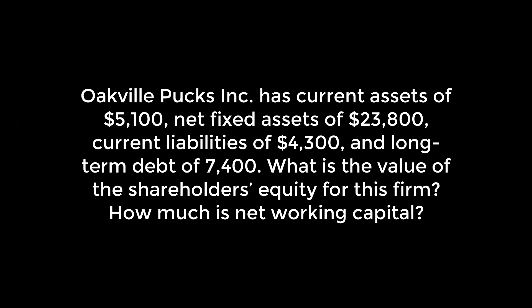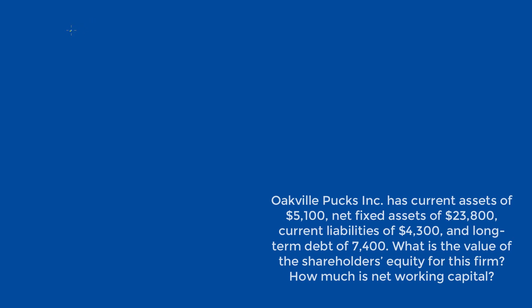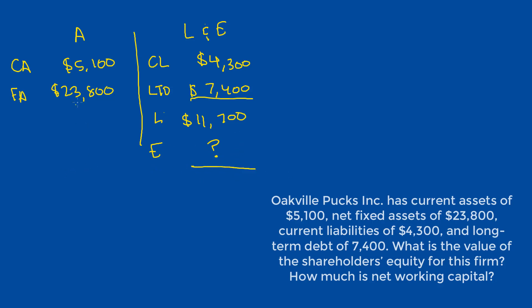Oakville Pucks Inc. has current assets of $5,100, net fixed assets of $23,800, current liabilities of $4,300, and long-term debt of $7,400. What is the value of shareholders' equity for this firm, and how much is net working capital? Our first step is to set up a statement of financial position with assets on the left-hand side and liabilities and equity on the right-hand side. We have current assets of $5,100, fixed assets of $23,800, current liabilities of $4,300, and long-term debt of $7,400, equaling $11,700 total in liabilities. We also have equity on this side, which we don't know.